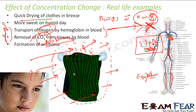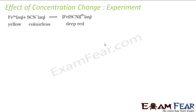Formation of ammonia is also one example where equilibrium plays a critical role. We will explain this formation of ammonia using the Haber process. Let's take one example or experiment for the effect of concentration change.